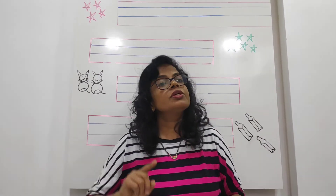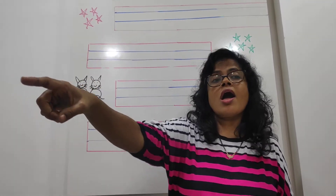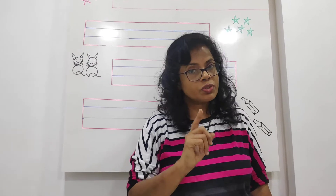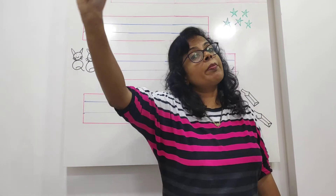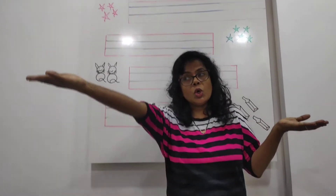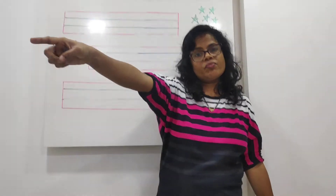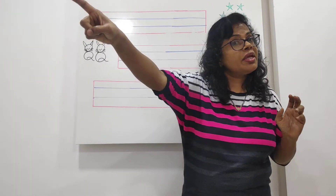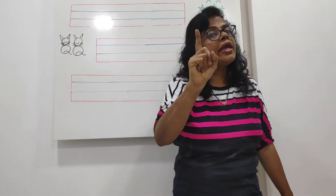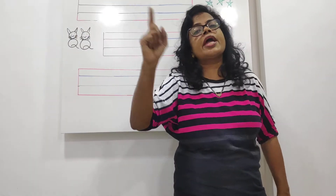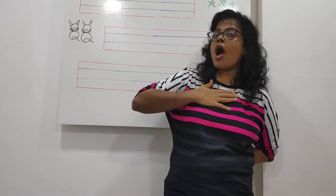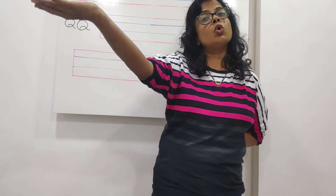When we point to many things that are away from us, we use the word 'those.' Those are markers — when things are far away from us and there are many of them, we use the word 'those.'